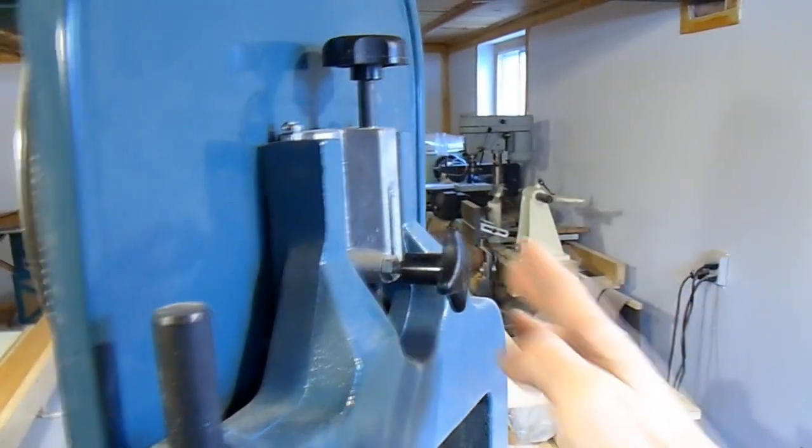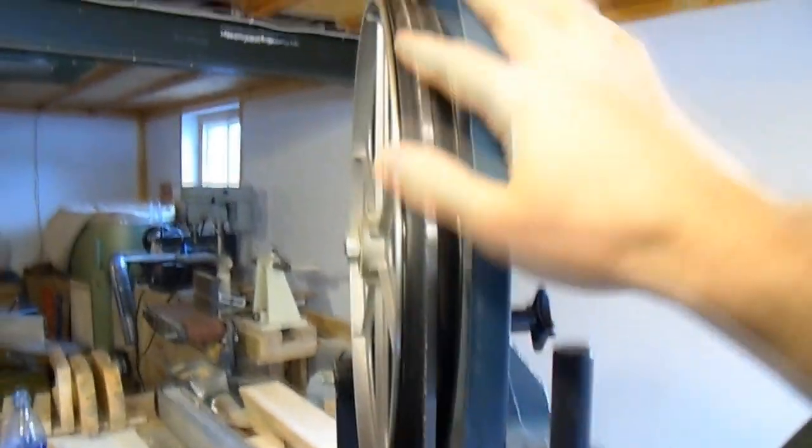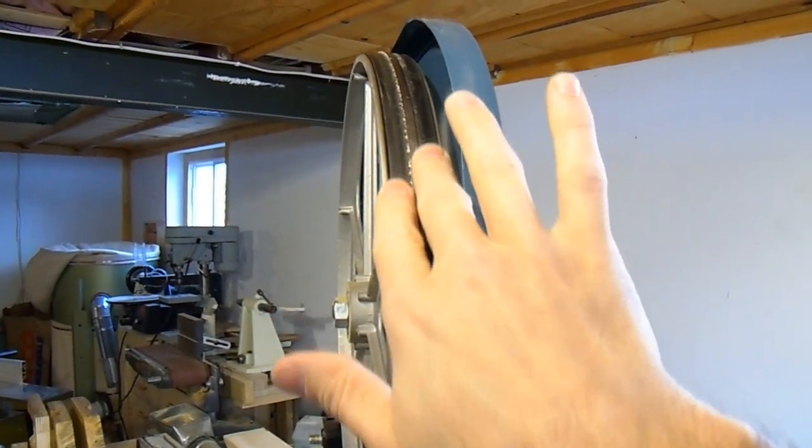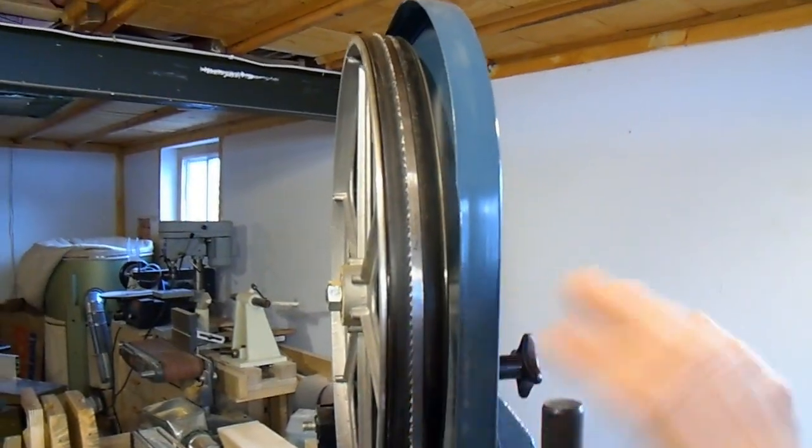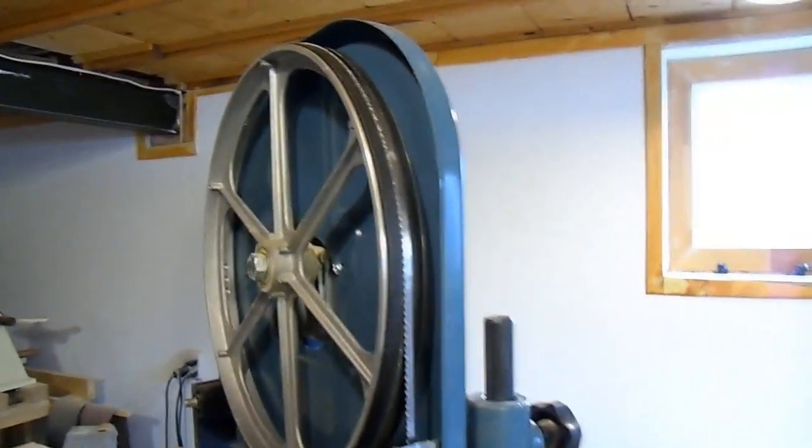Now on a bandsaw, there's always a little adjustment knob which allows you to tilt the top wheel, just in case your belt has a tendency to wander to either side. So you can sort of bring it back in or adjust how the blade tracks. Let me demonstrate how that works with this bandsaw.